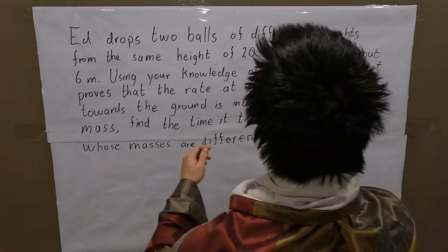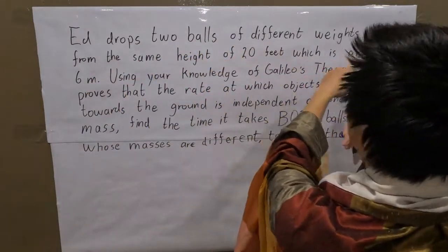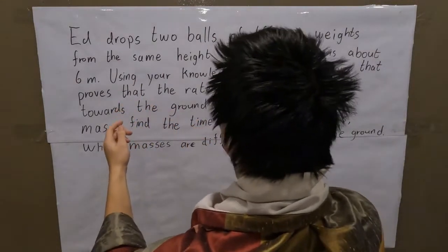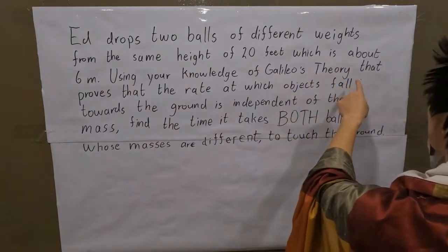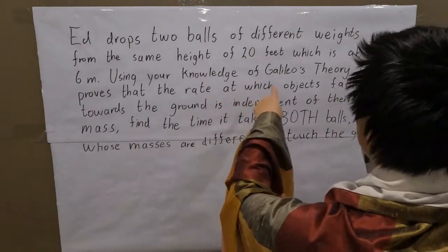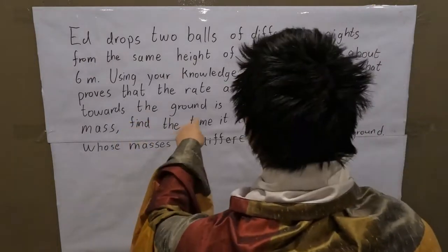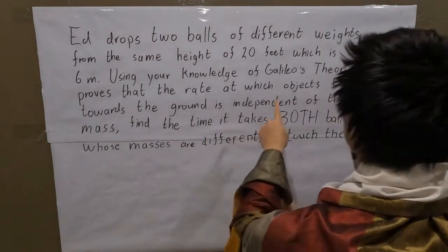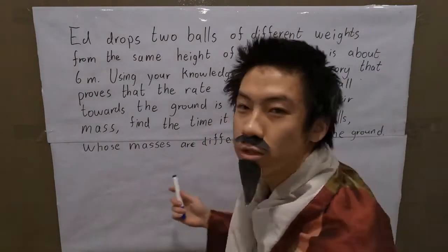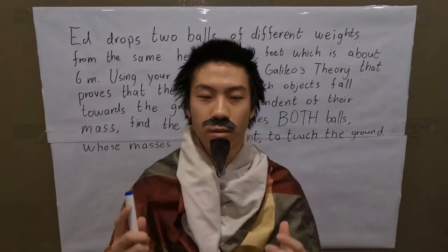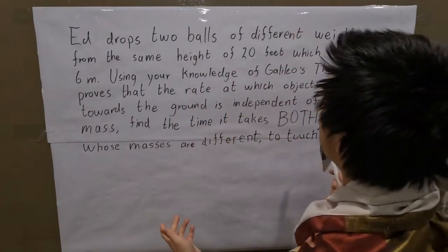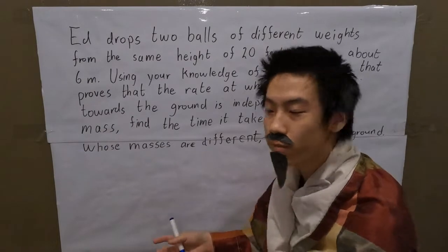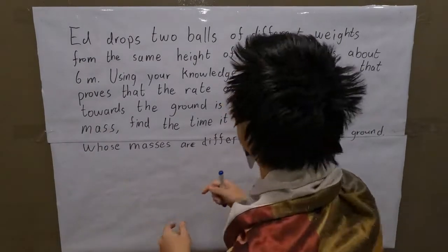The question is: Ed drops two balls of different weights from the same height of 20 feet, which is about 6 meters. Using your knowledge of Galileo's theory — that the rate at which objects fall towards the ground is independent of their mass — find the time it takes both balls to touch the ground. This is so nostalgic. My master Galileo already tried this experiment from the Tower of Pisa. He dropped two objects of different weights and they reached the ground at the same time.